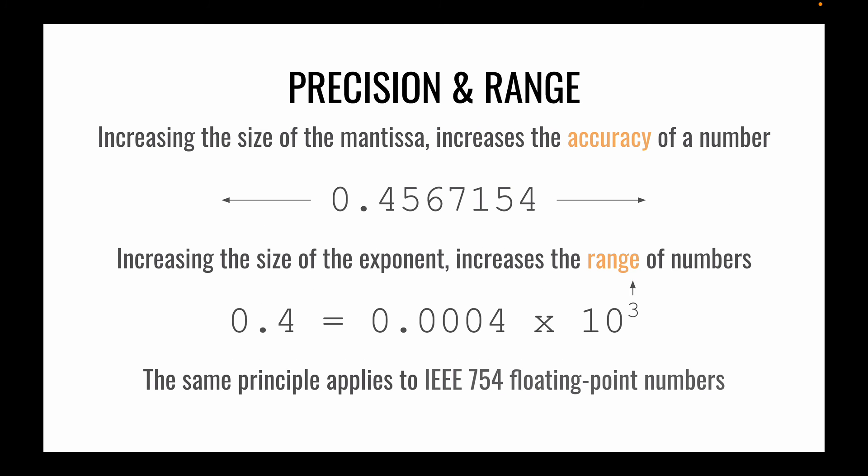When we look at the size of the mantissa and the exponent we need to understand that increasing the size of the mantissa will increase the accuracy of the number. And when we increase the size of the exponent we actually get a larger range of numbers.